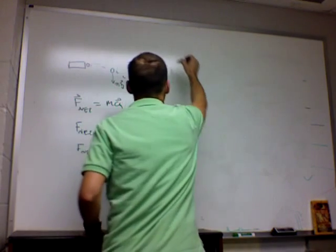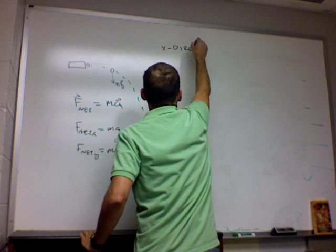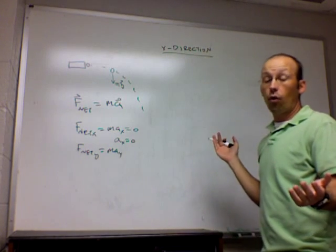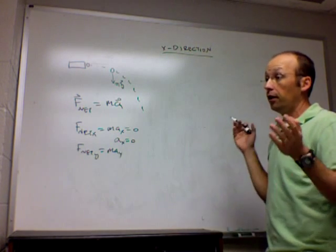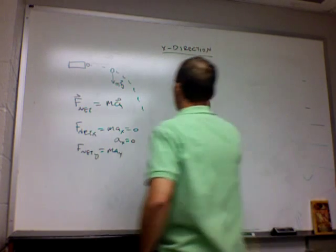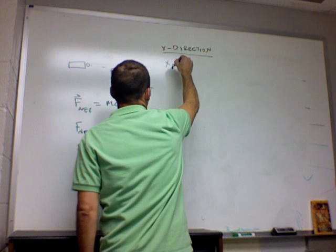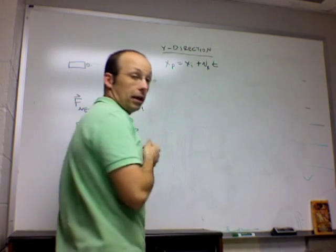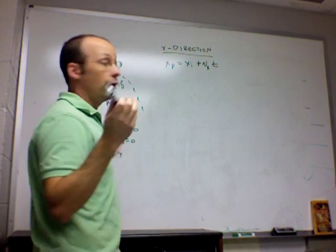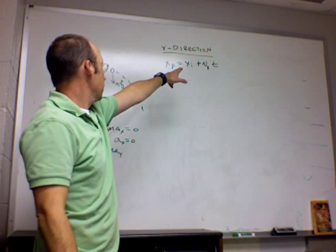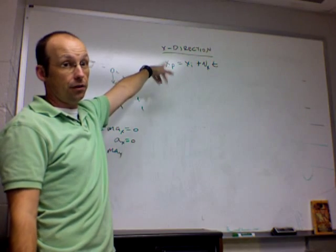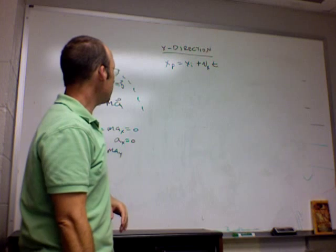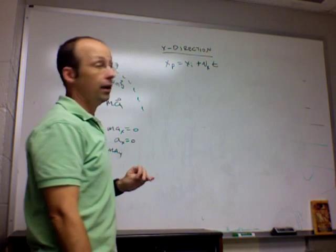So in the x direction, I have the following equation that can completely describe the motion of the particle. x final equals x initial plus v x t, assuming time starts at zero. Because there's no acceleration, this is just the definition of average velocity is change in position over change in time. Nothing else to say in the x direction.